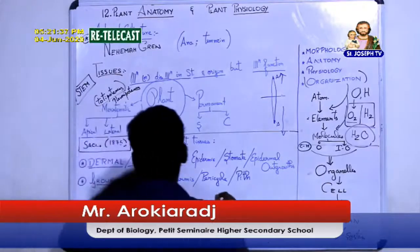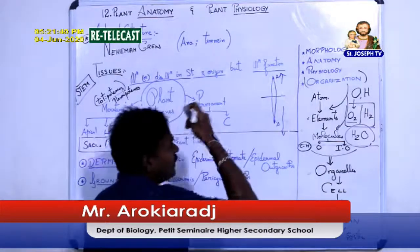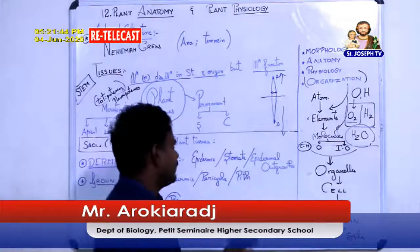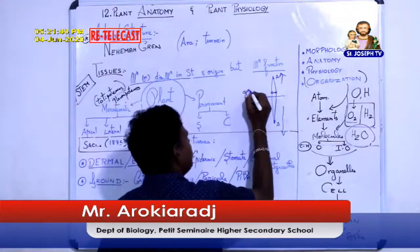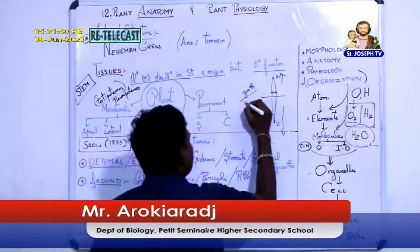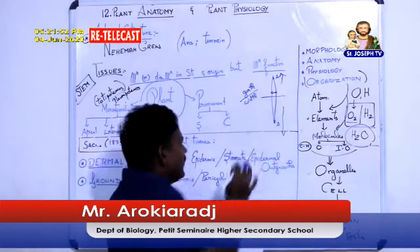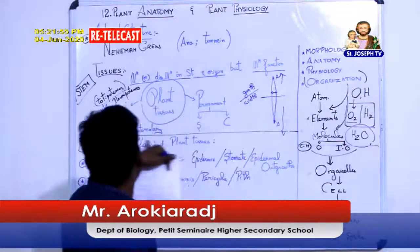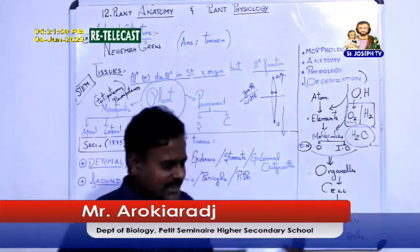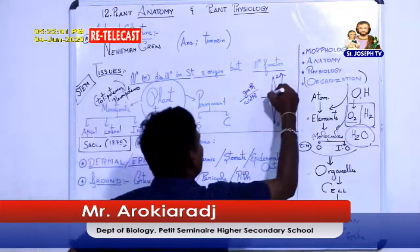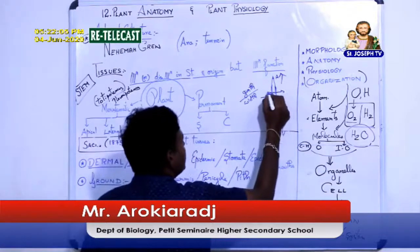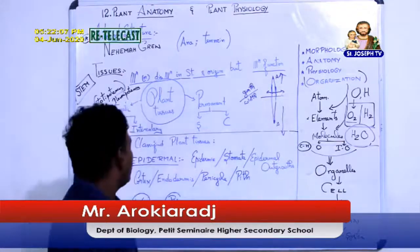Lateral meristem is responsible for the girth — that is the width — of the plant. The growth sideways or sidewards is because of lateral meristem. These are found along the sides of the plant and are responsible for widthwise growth.